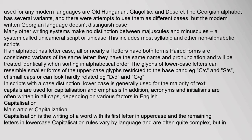The Georgian alphabet has several variants and there were attempts to use them as different cases, but the modern written Georgian language doesn't distinguish case. Many other writing systems make no distinction between majuscules and minuscules — a system called unicameral script or unicase. This includes most syllabic and other non-alphabetic scripts. If an alphabet has letter case, all or nearly all letters have both forms; paired forms are considered variants of the same letter.